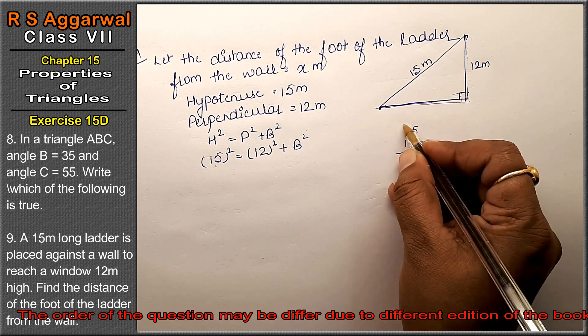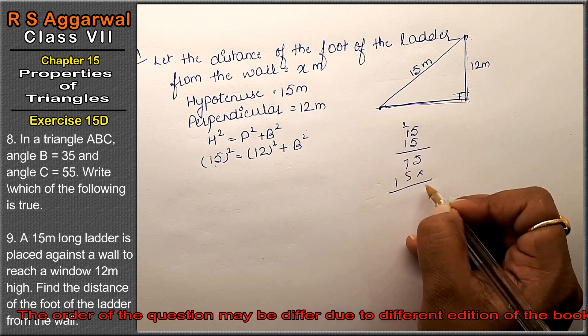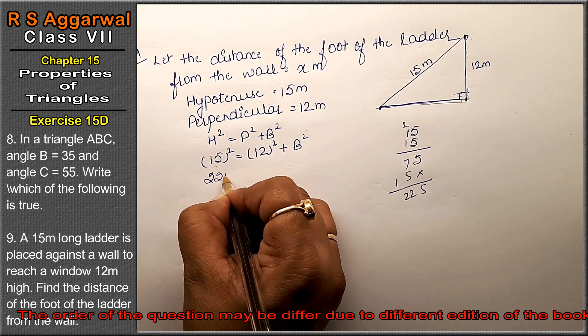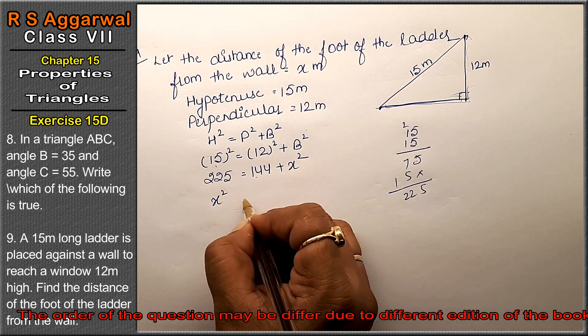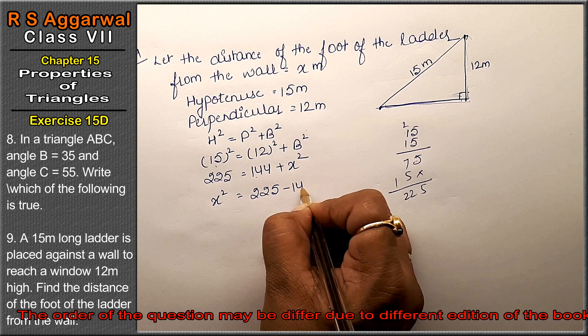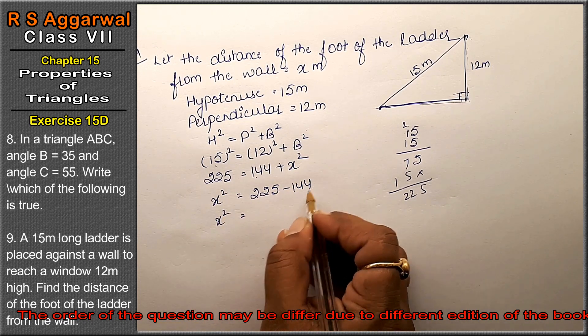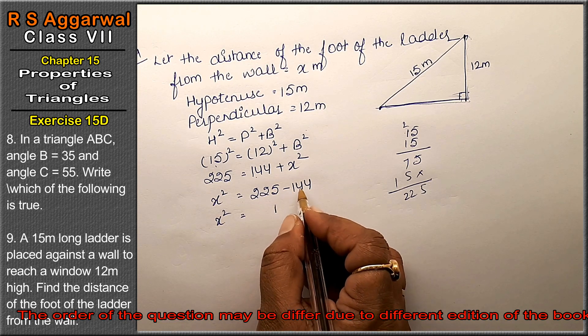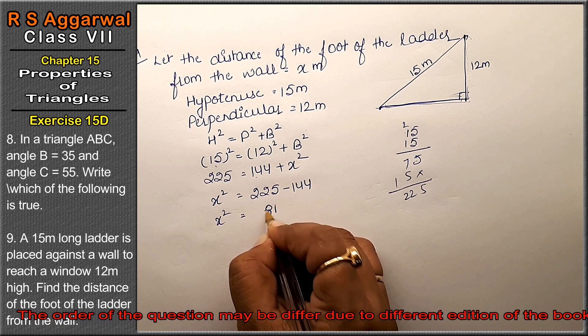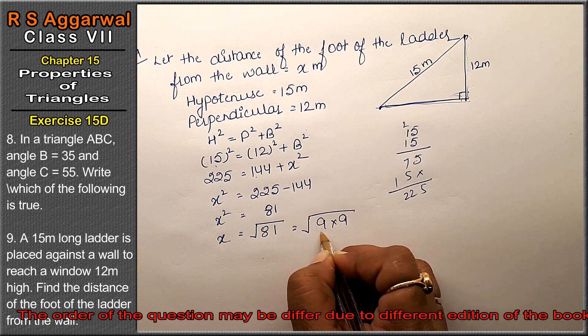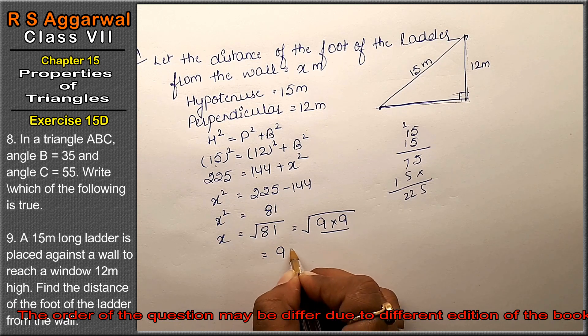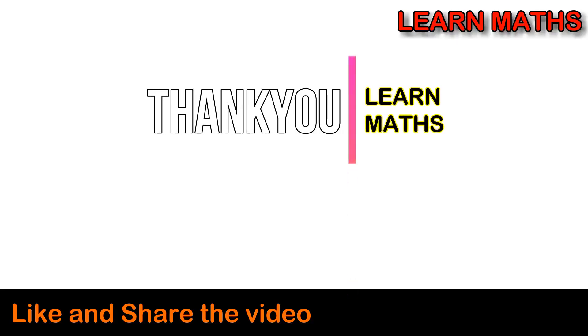15 squared is 225 equals 144, and this is x². x² is how much? This was plus, so when it comes to the other side it becomes minus. So x² value is 81. So x value is square root of 81, which we know is 9 times 9 equals 81. So the answer is 9 meters.